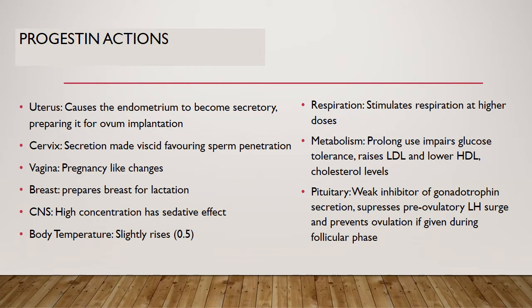Progesterone decreases estrogen-driven endometrial proliferation, leading to development of a secretory endometrium with the onset of menstruation. Endocervical gland secretion is turned to a scant viscid material. Progesterone is important for the maintenance of pregnancy by suppressing menstruation and uterine contractility. The development of the mammary gland requires both estrogen and progesterone. During pregnancy, acting with estrogen, it brings about proliferation of the acini of the mammary gland; towards the end of pregnancy the acini are filled with secretions. After the levels of estrogen and progesterone decrease at parturition, lactation begins.